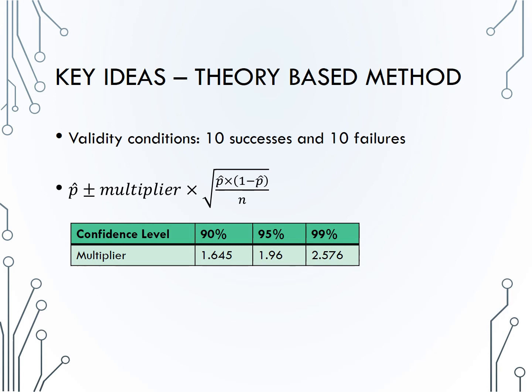Therefore we can use the normal distribution to find a confidence interval, using the formula p-hat plus and minus some multiplier times the square root of p-hat times 1 minus p-hat over n. The multiplier is determined by the confidence level, and your three common multipliers are given in this table.